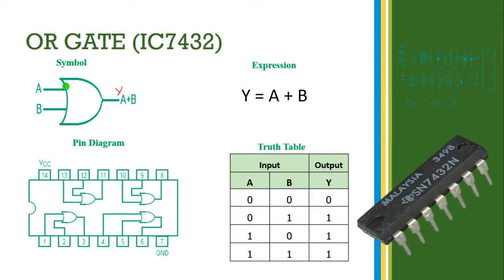How are we going to perform the addition operation? The input value 00 gives output 0. Looking at the truth table: 00 means output becomes 0; 01 means output becomes 1; 10 means output becomes 1; and 11 means output becomes 1. That is why it performs the addition operation.